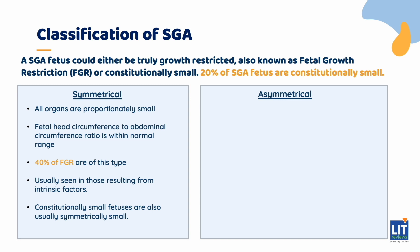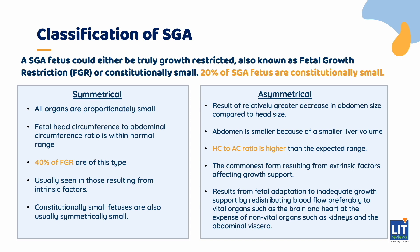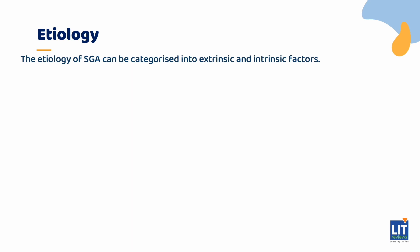On the other hand, asymmetrical FGR results from a relatively greater decrease in abdomen size compared to head size. The abdomen will be smaller because of a smaller liver volume compared to the relatively unaffected brain size, and hence the HC to AC ratio is higher than the expected range. This pattern of FGR is the commonest form resulting from extrinsic factors affecting growth support. The asymmetry results from fetal adaptation to inadequate growth support by redistributing blood flow preferably to vital organs such as the brain and heart.